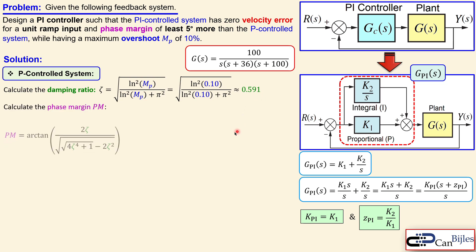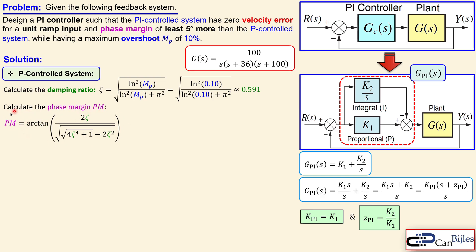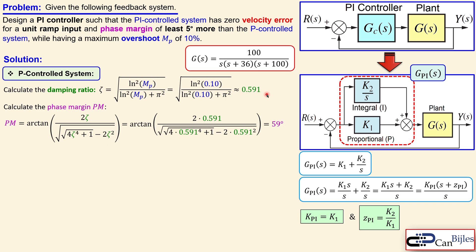Now we calculate the phase margin using the formula in the frequency domain, using the zeta we just calculated. I don't write this formula, I just use it here. Substituting the value we just determined for our damping ratio gives 59 degrees.